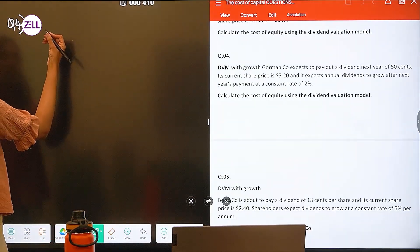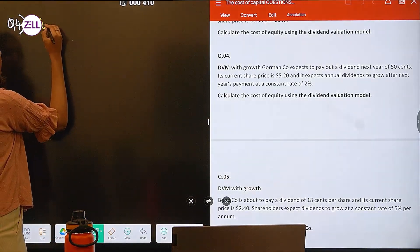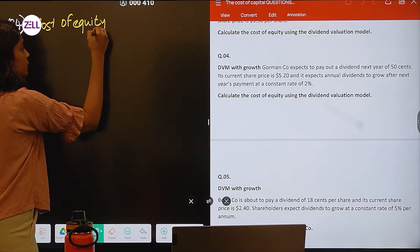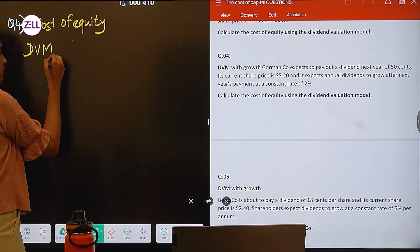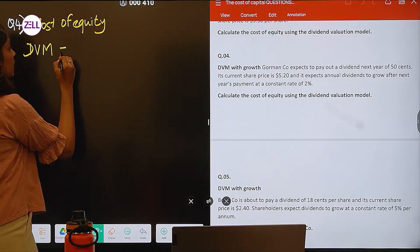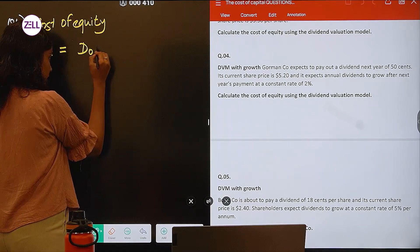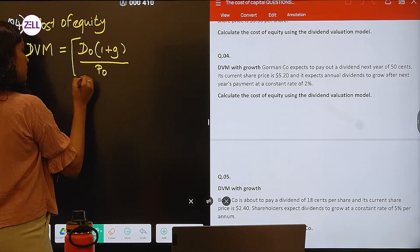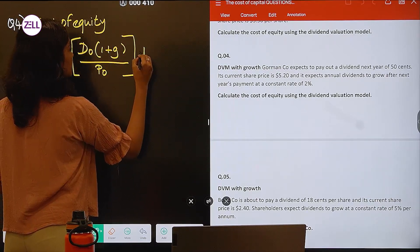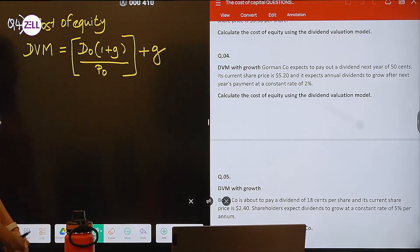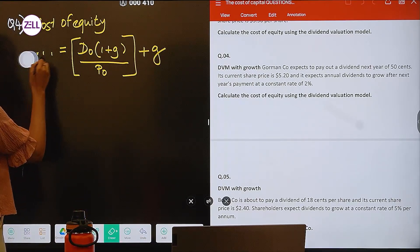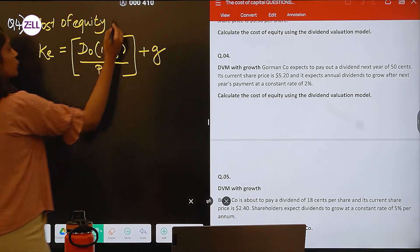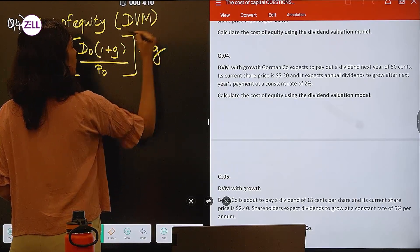So how does it go? Calculation of cost of equity. We are gonna use the dividend valuation model. This is very important guys. So what is the formula for dividend valuation model? It is D0 into 1 plus G divided by P0 plus G. This is how I am going to calculate my cost of equity using dividend valuation model.